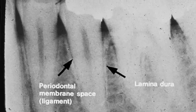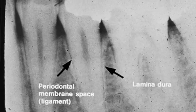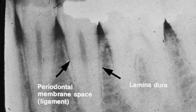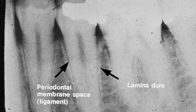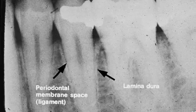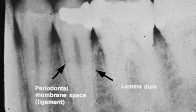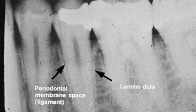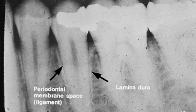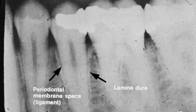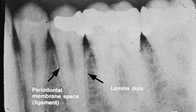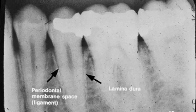The arrow on the left points to the radiolucent periodontal ligament, or periodontal membrane space. It is where the periodontal ligament attaches the tooth root to the supporting bone. The arrow on the right points to the lamina dura. It is radiopaque, hard, compact, cortical bone that forms the tooth socket.